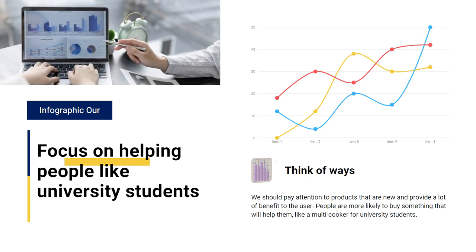Focus on helping people like university students. We should pay attention to products that are new and provide a lot of benefit to the user. People are more likely to buy something that will help them. For example, a multi-cooker for university students. I say multi-cooker as an example because I am a university student, and I have problems when it comes to cooking foods like noodles.